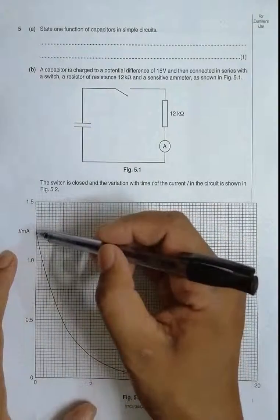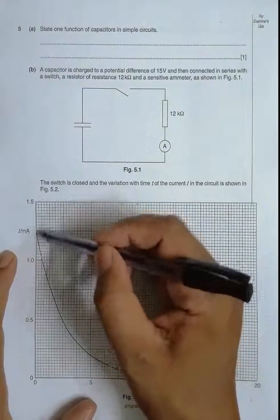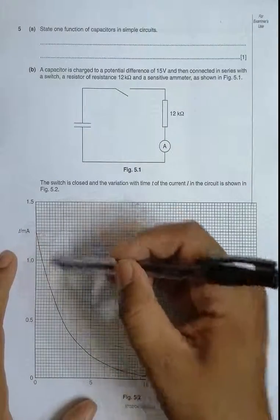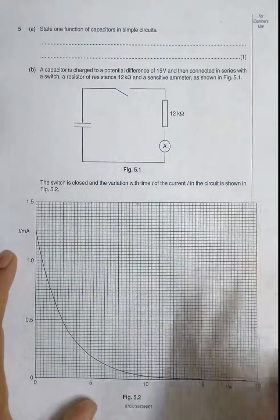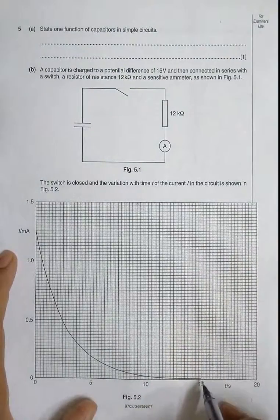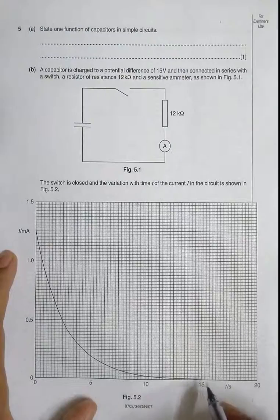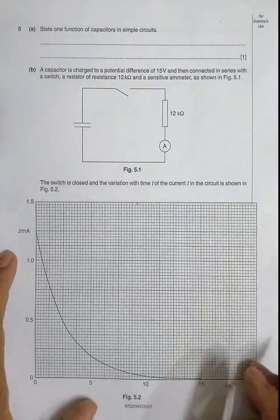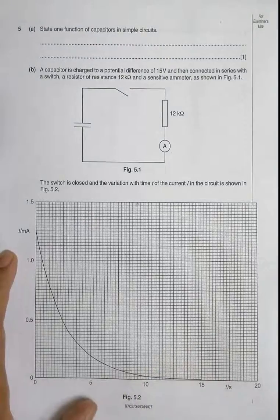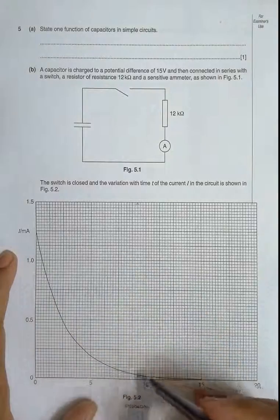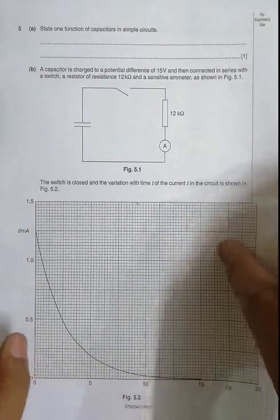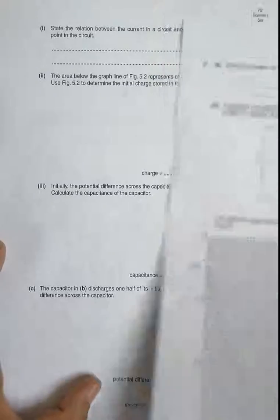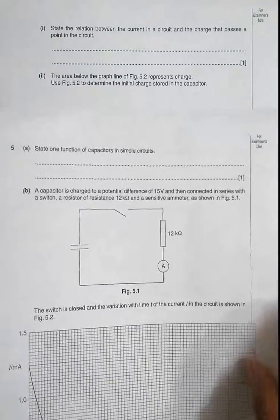The current varies from a maximum value of about 1.5 milliamperes down to a minimum of zero over a certain time. The graph does not quite show the variation all the way to zero, but it would ultimately reach zero. As you can see, the variation is very rapid in the beginning and becomes slower and slower later.